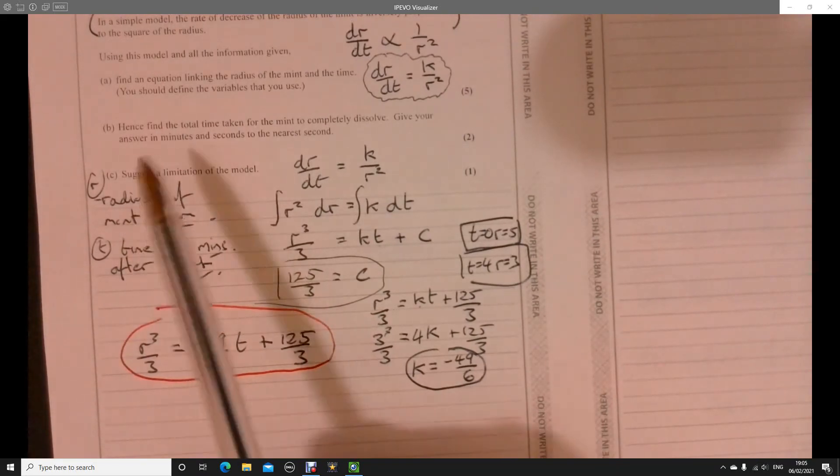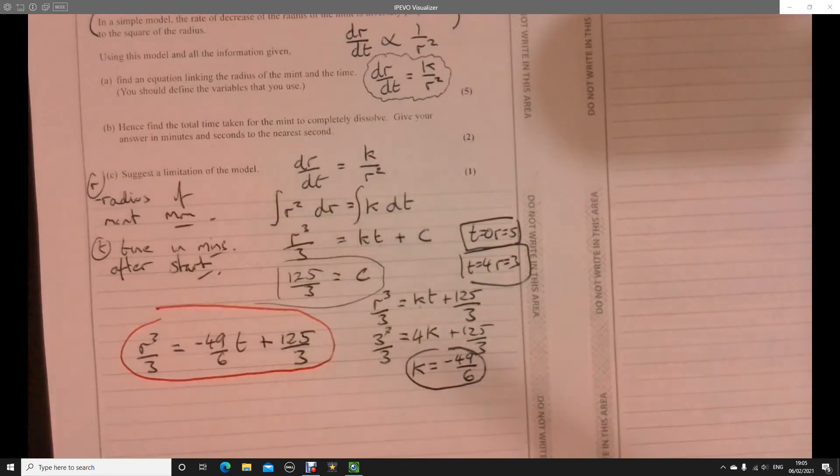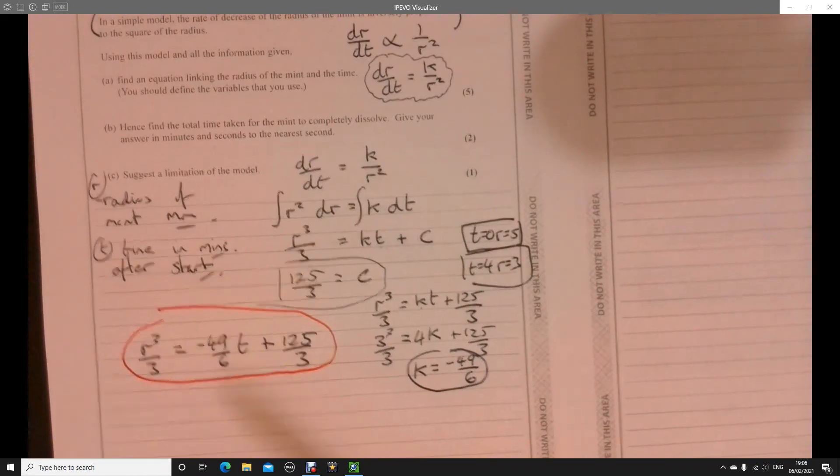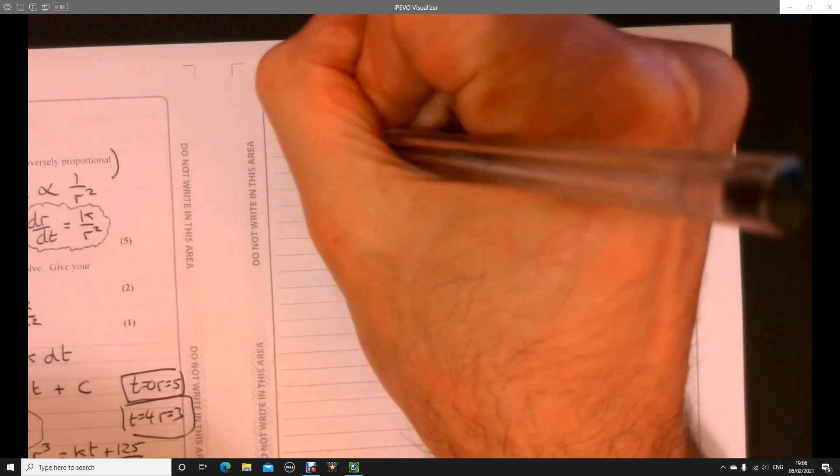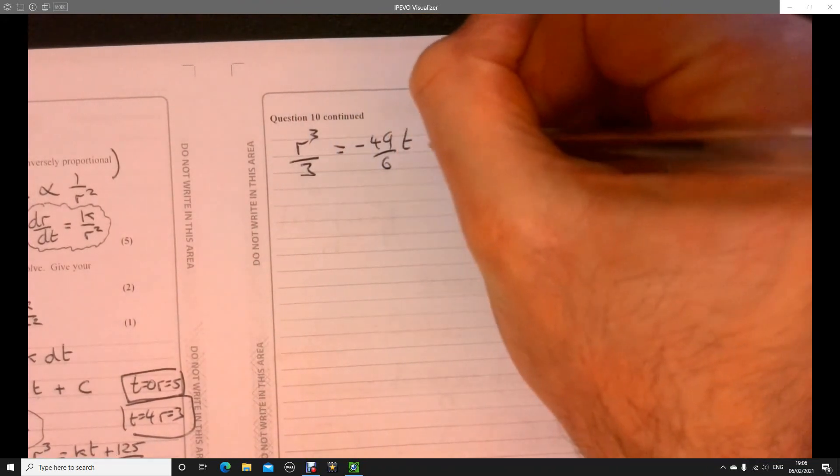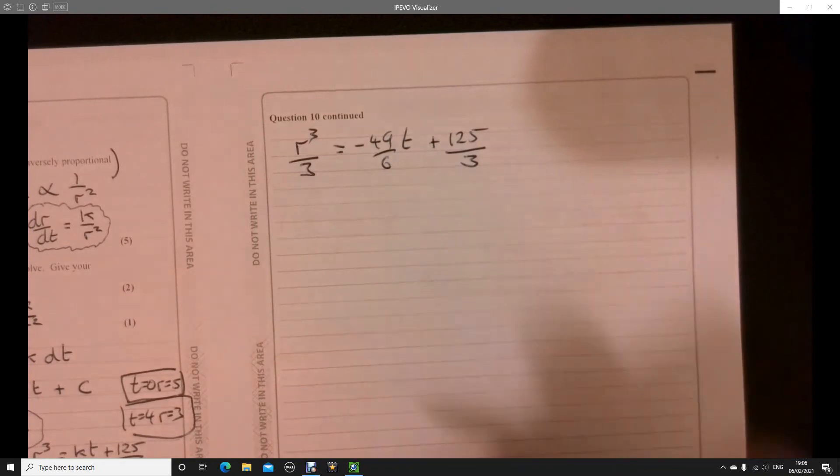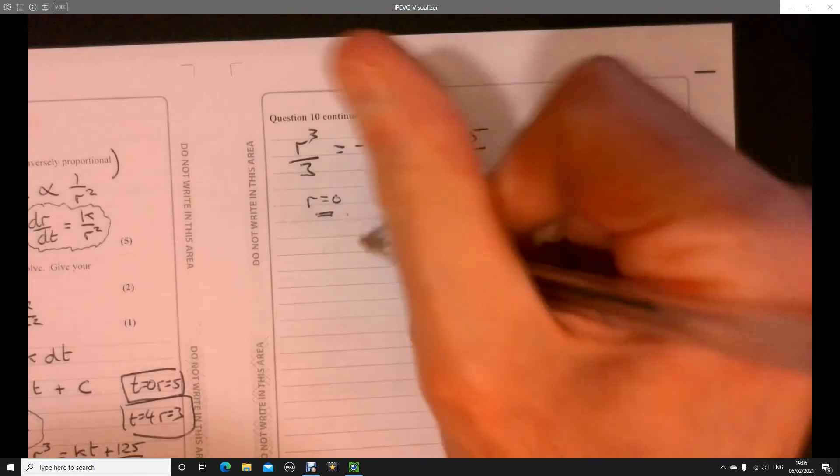Now, let's have a look at part B. Now, it says, hence, find the total time taken for the mint to completely dissolve. Give your answer in minutes and seconds to the nearest second. All right. So let's have a think about that. So what's that actually mean to us? So it means when is the radius going to equal zero? All right. When's the radius going to equal zero? So remember where we are at the moment, R cubed over 3 equals minus 49 over 6 T plus 125 over 3. The maths involved is relatively straightforward. It's just what's the calculation that you've got to do.